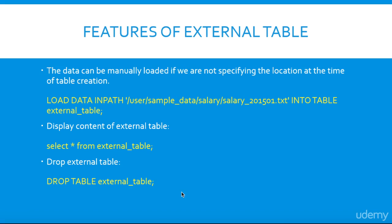Coming back to our main topic, when it comes to reading data from external or internal tables, select queries are quite similar to what we use in traditional database systems like MySQL or Oracle. There are a lot of benefits when you use an external table. Since these files reside outside Hive, they can be accessed by other existing programs. When you drop an external table in Hive, the data remains in the underlying location in HDFS — only the metadata is dropped from Hive, not the data. When you create an external table, Hive does not own the data and control settings and directories.